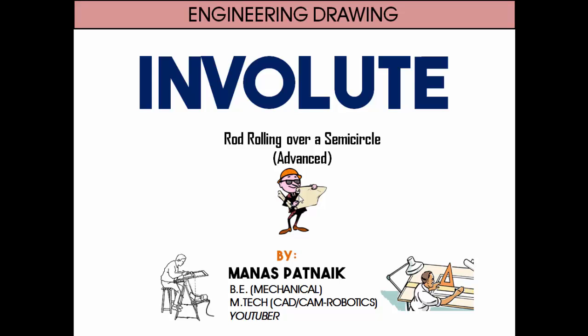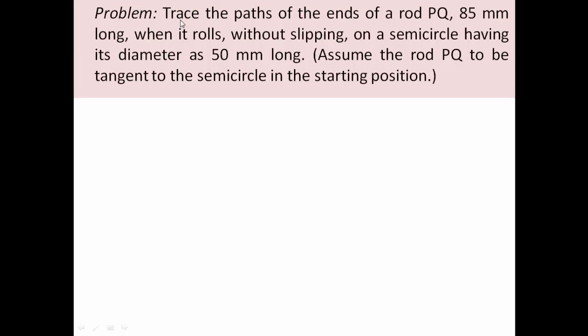Let's see what the problem has in store. Here we go: trace the paths of the ends of a rod PQ, 85 mm long, when it rolls without slipping on a semicircle having its diameter as 50 mm long. Assume the rod PQ to be tangent to the semicircle in the starting position.